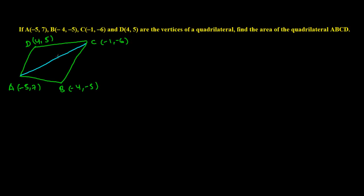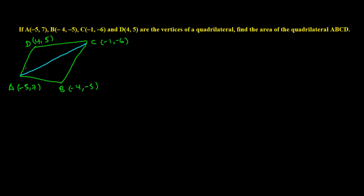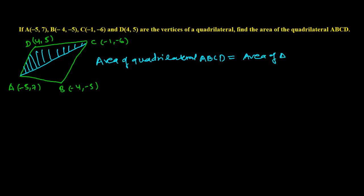What we'll do is divide the quadrilateral into two triangles and find the area of each part. First we'll find the area of triangle ACD, then the area of triangle ABC, and when we sum both we get the area of the whole quadrilateral. So: Area of quadrilateral ABCD = Area of triangle ACD + Area of triangle ABC.